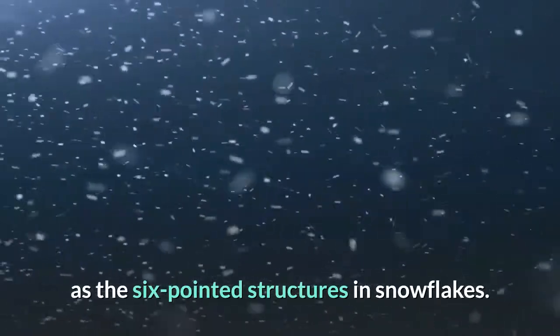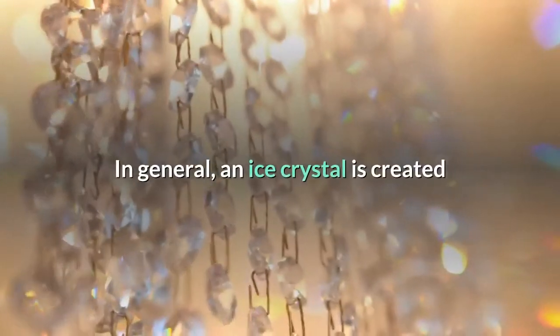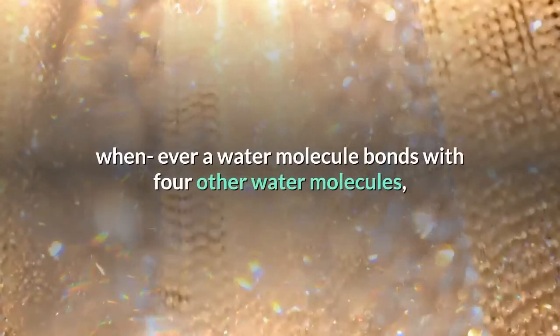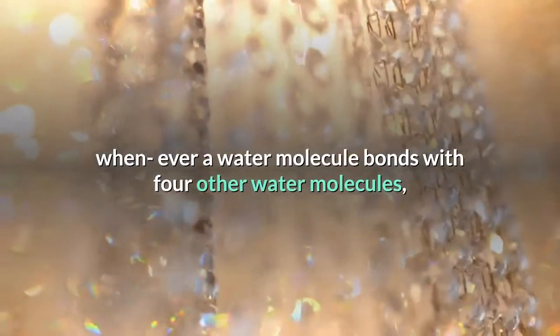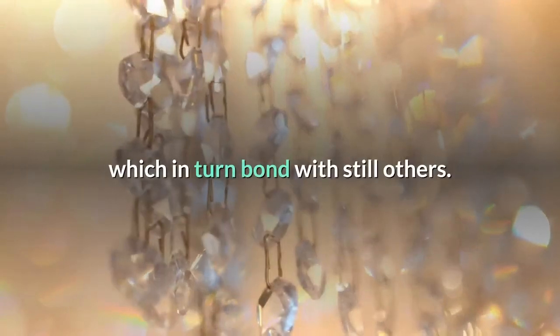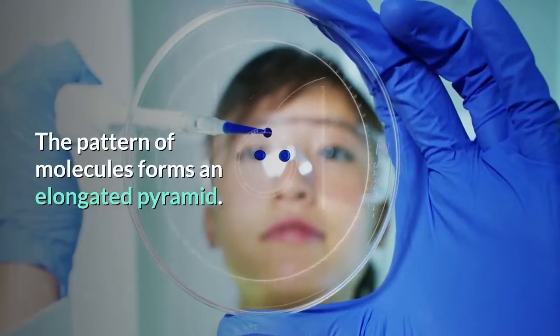These patterns include the six-pointed structures in snowflakes. In general, an ice crystal is created whenever a water molecule bonds with four other water molecules, which in turn bond with still others. The pattern of molecules forms an elongated pyramid.